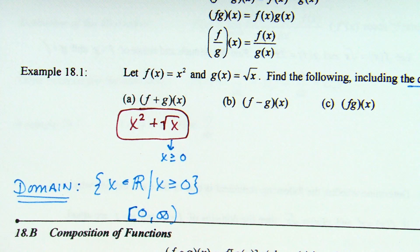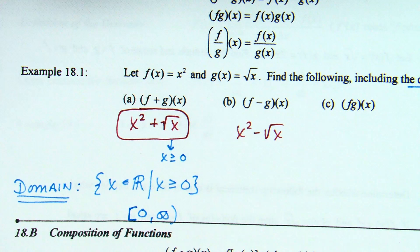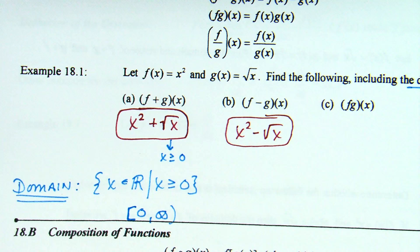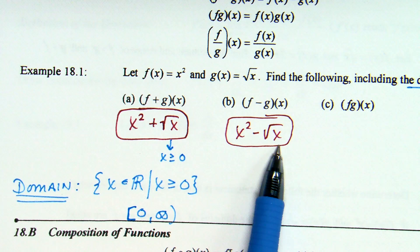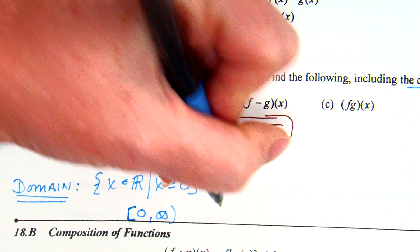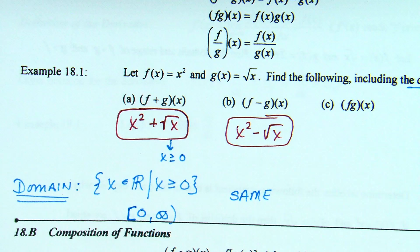Let's try part b: f minus g of x. That's x squared minus square root of x. Can that be cleaned up? No, that is not simplified. What about the domain? The only thing that changed is there being subtraction — I still have x squared and square root of x. So we're still going to have the fact that x has to be positive. It's an appropriate shortcut to write the same domain.